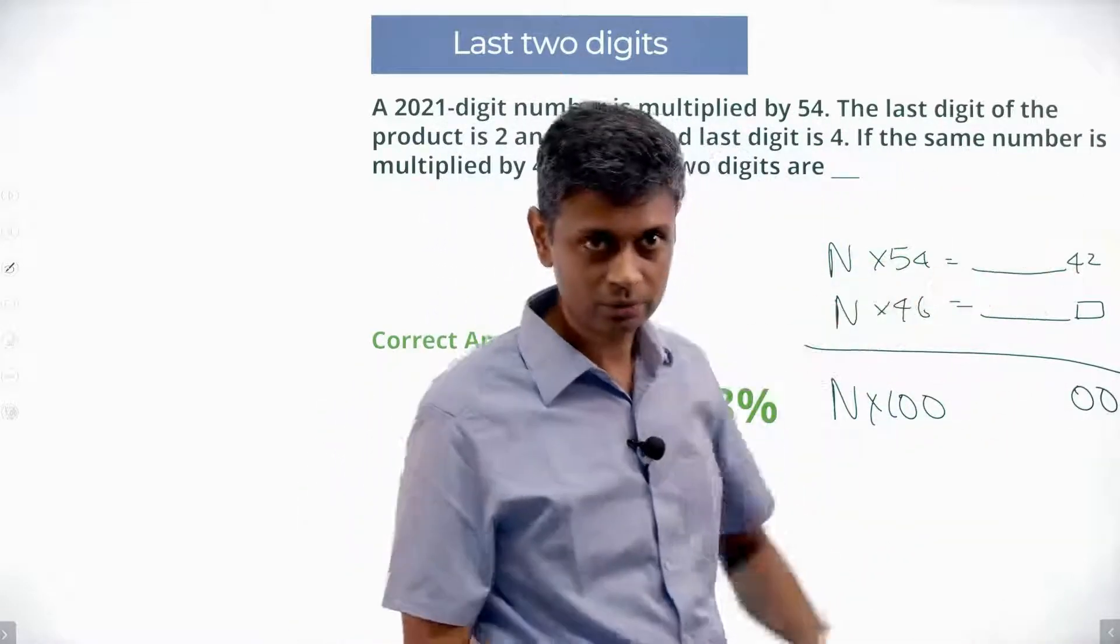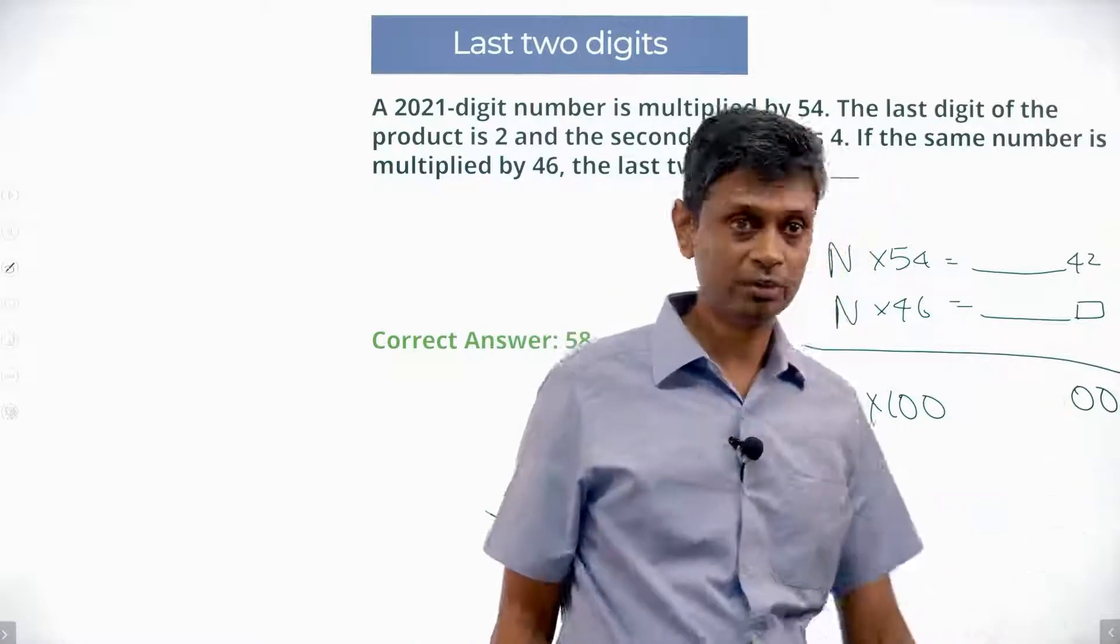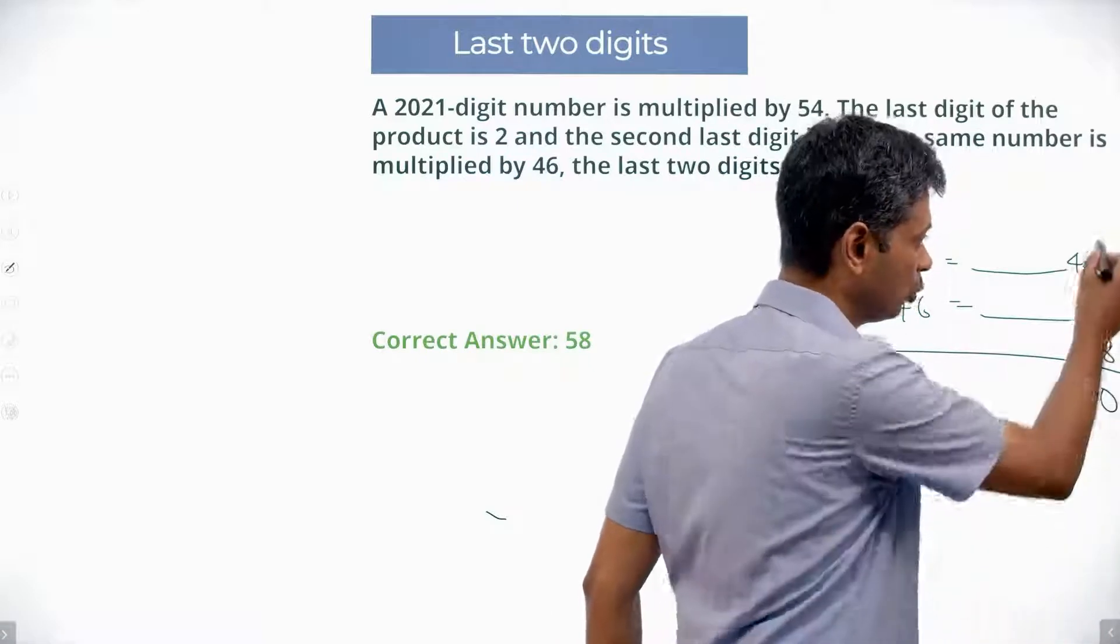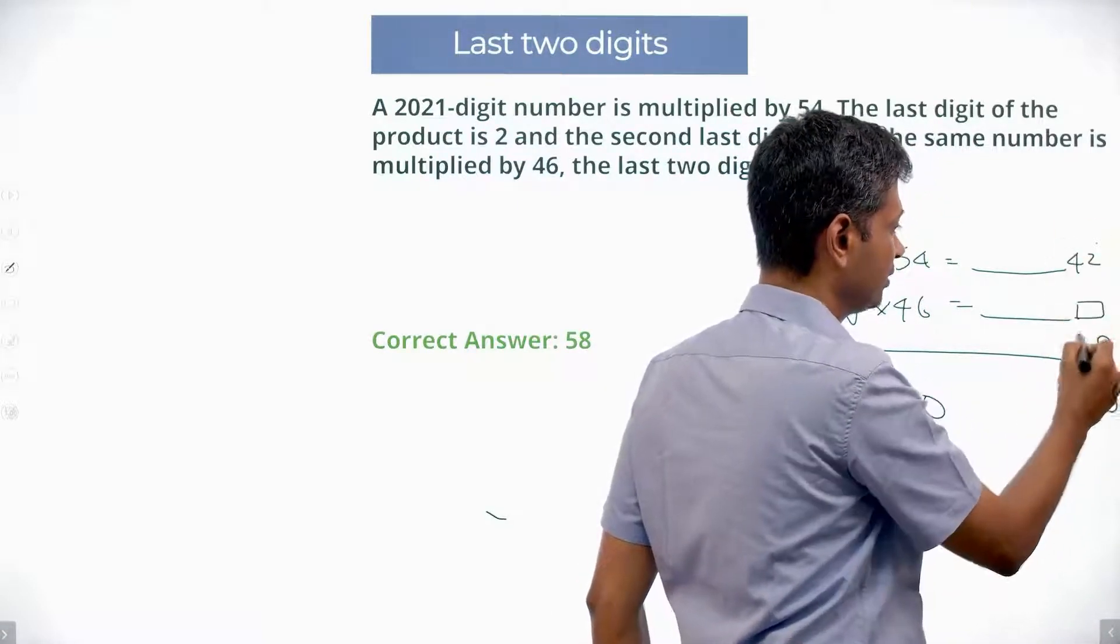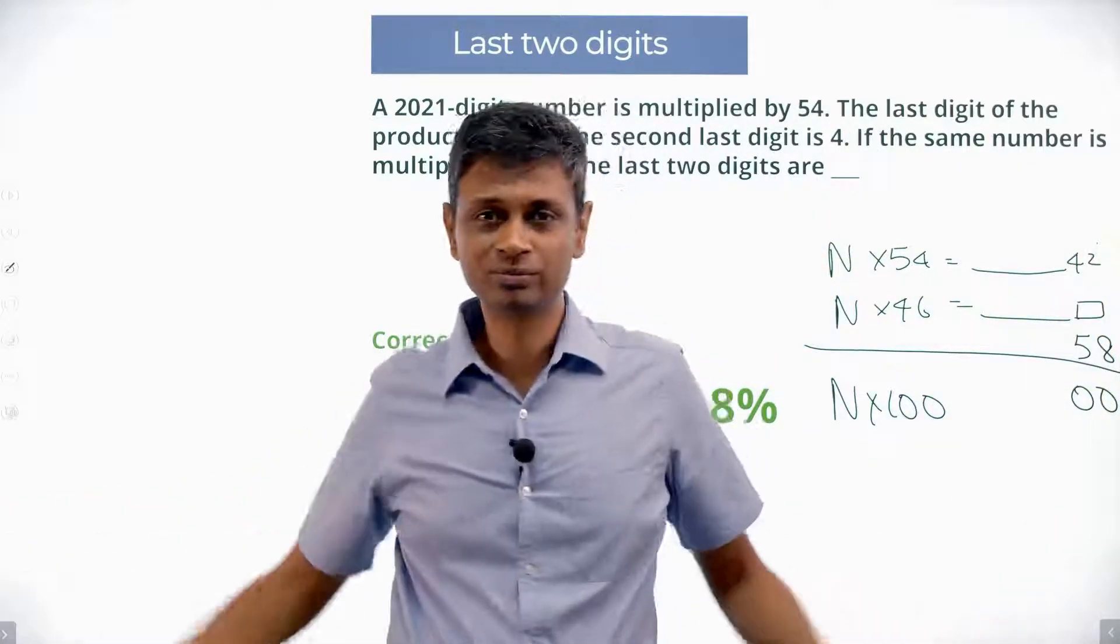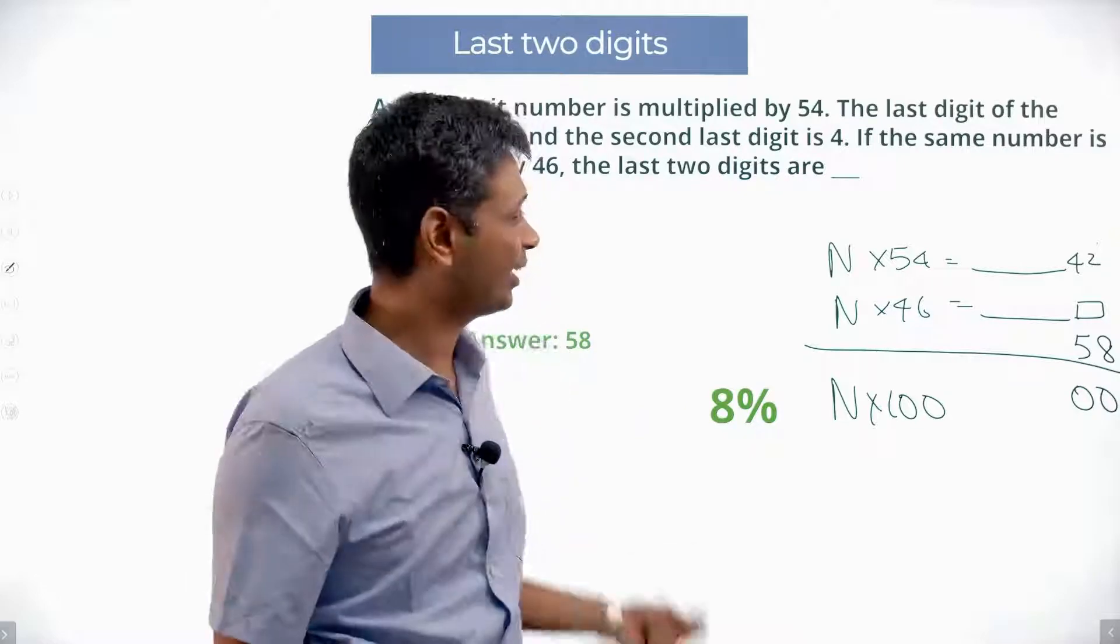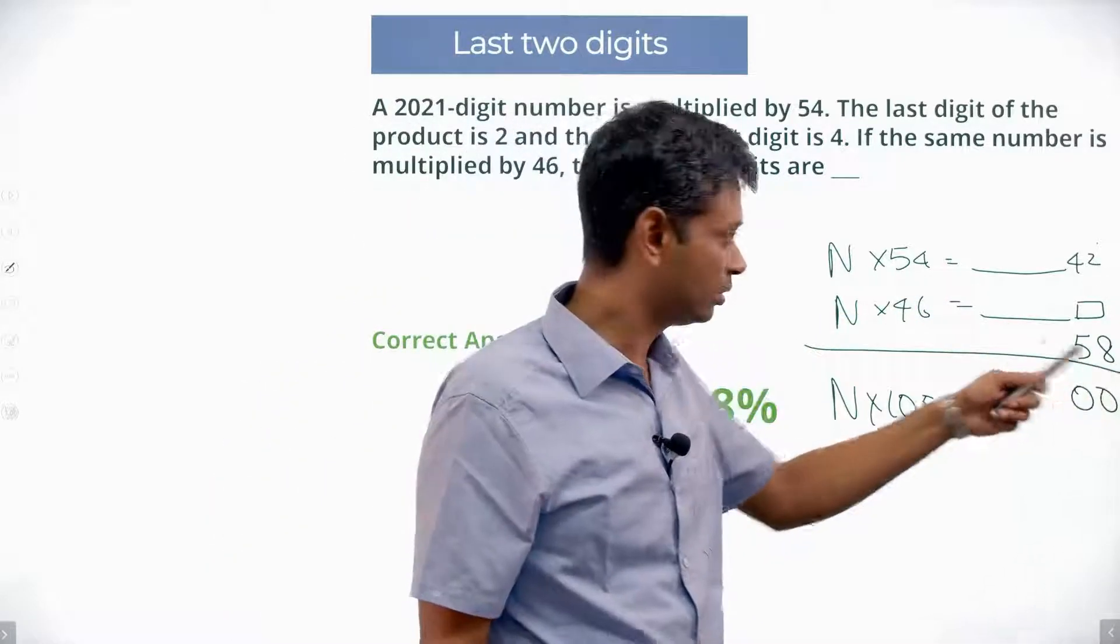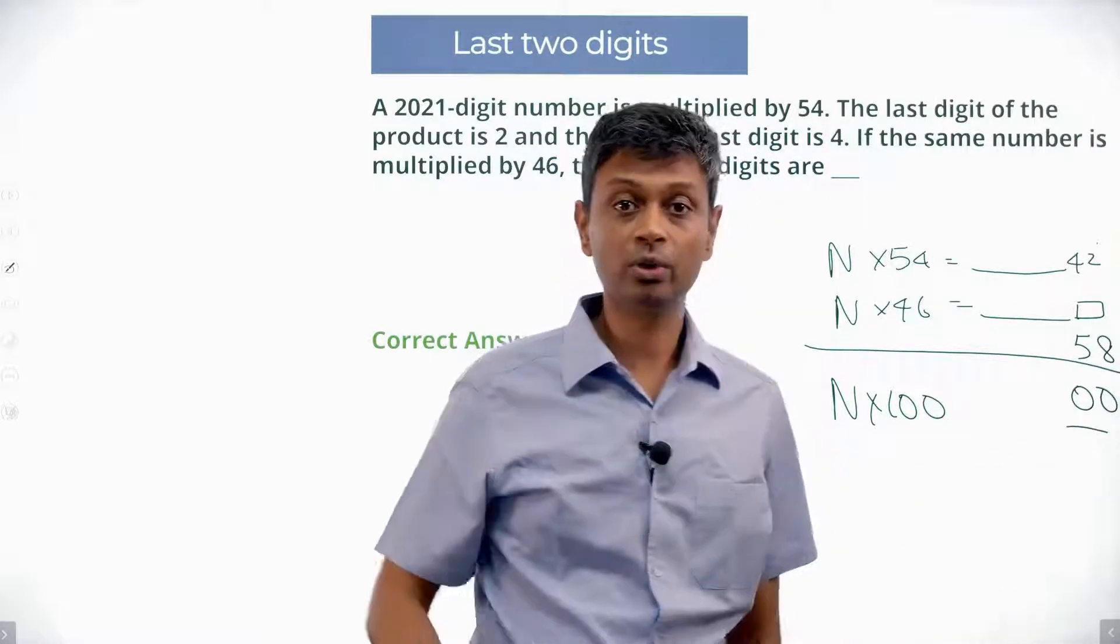So, this last 2 digits is 42. This last 2 digits is something. These 2 last 2 digits should be 0. 2 plus something is 0. That unit place has to be 8. 2 plus 8 is 10, 0. 1 carried over. 1 plus 4, 5. This has to be 5. 10, 58, 2. 54 plus 46 is 100. If you choose that idea, you can write down this answer in seconds. This number gives 42. This number gives 58. You add these 2 numbers, the last 2 digits should be 0, 0. That works.